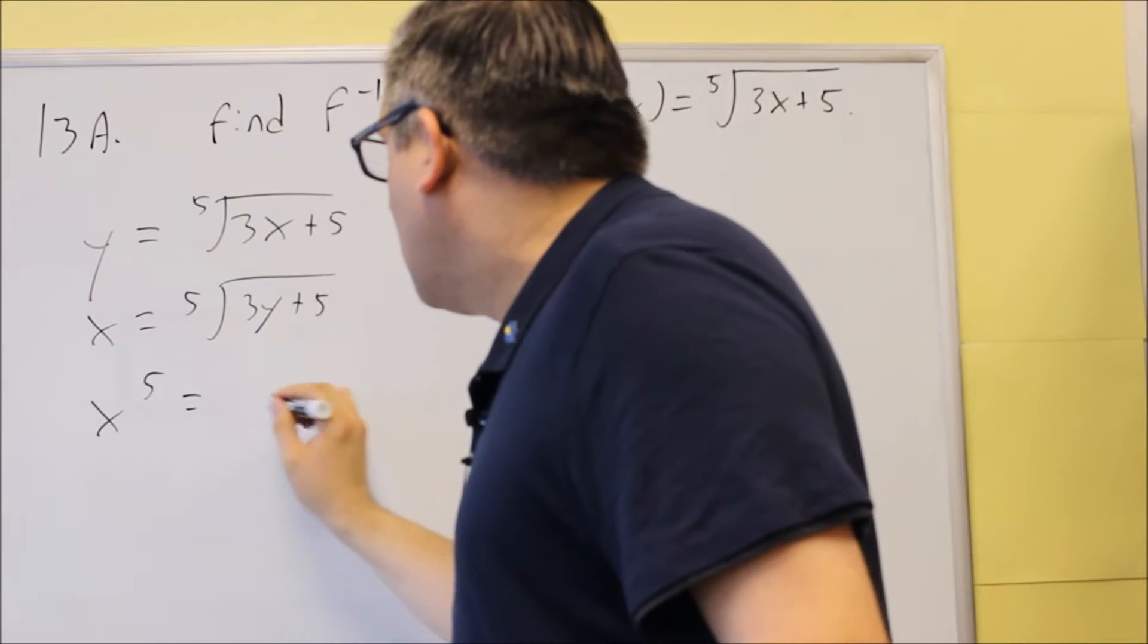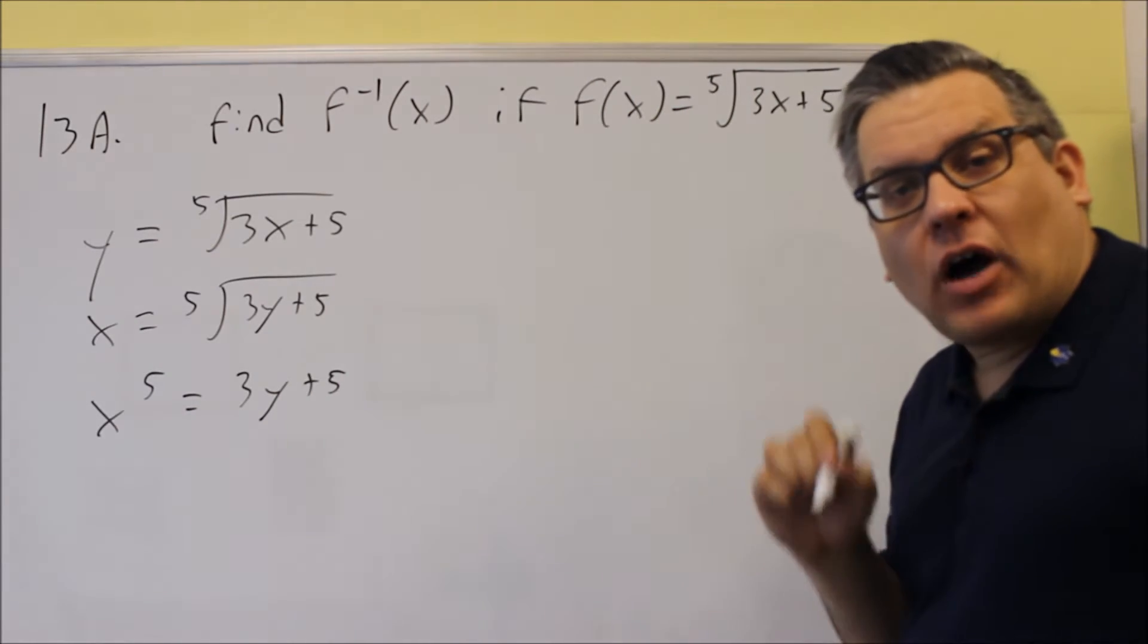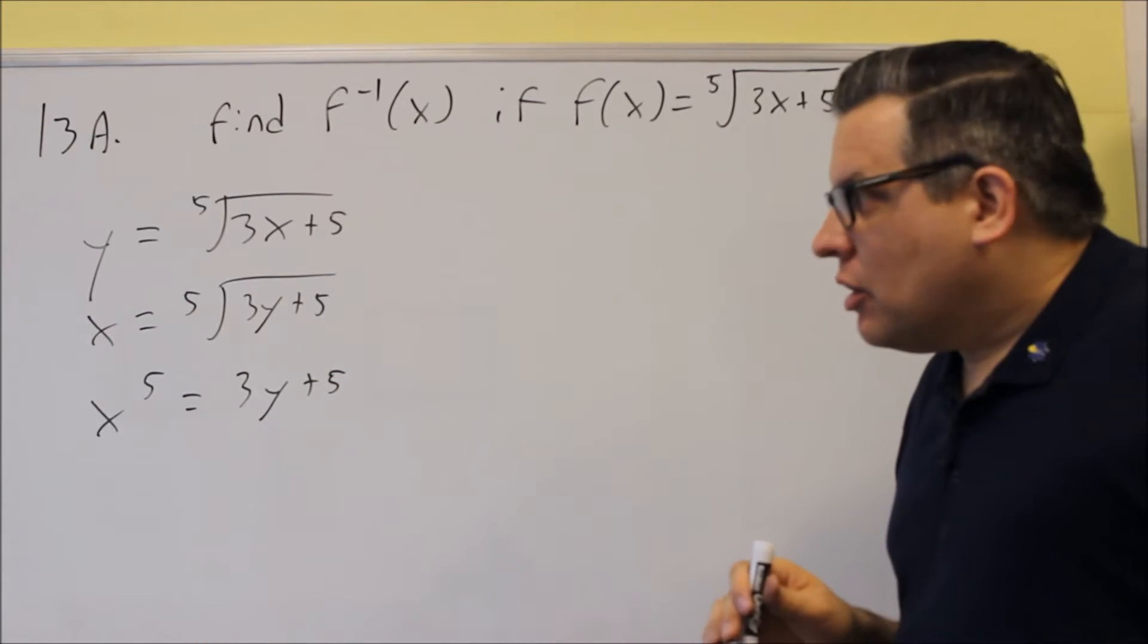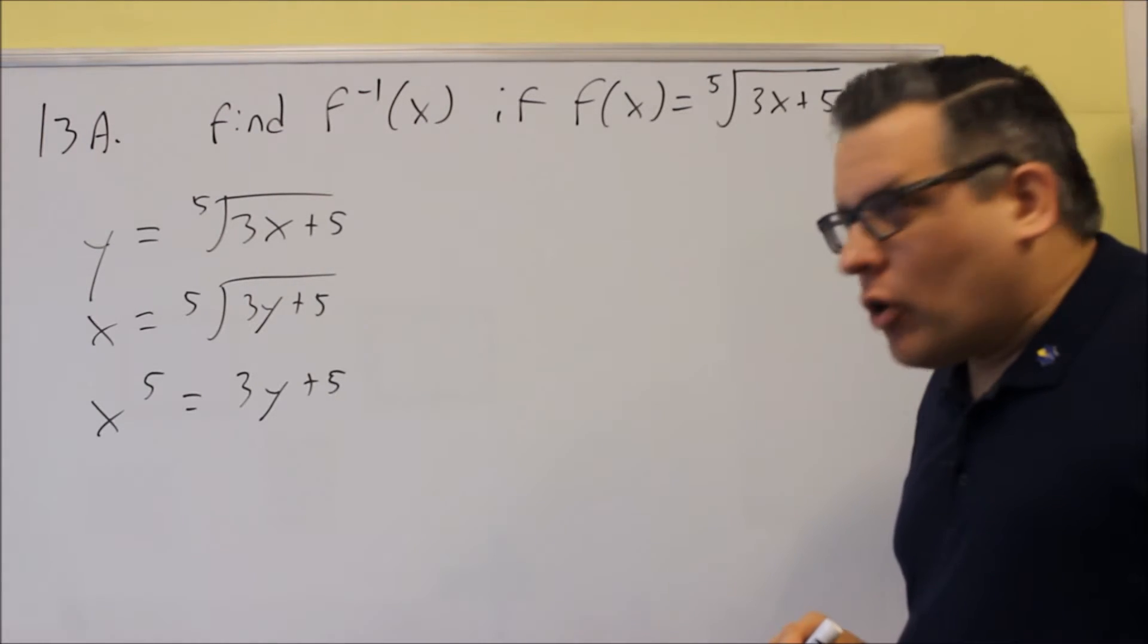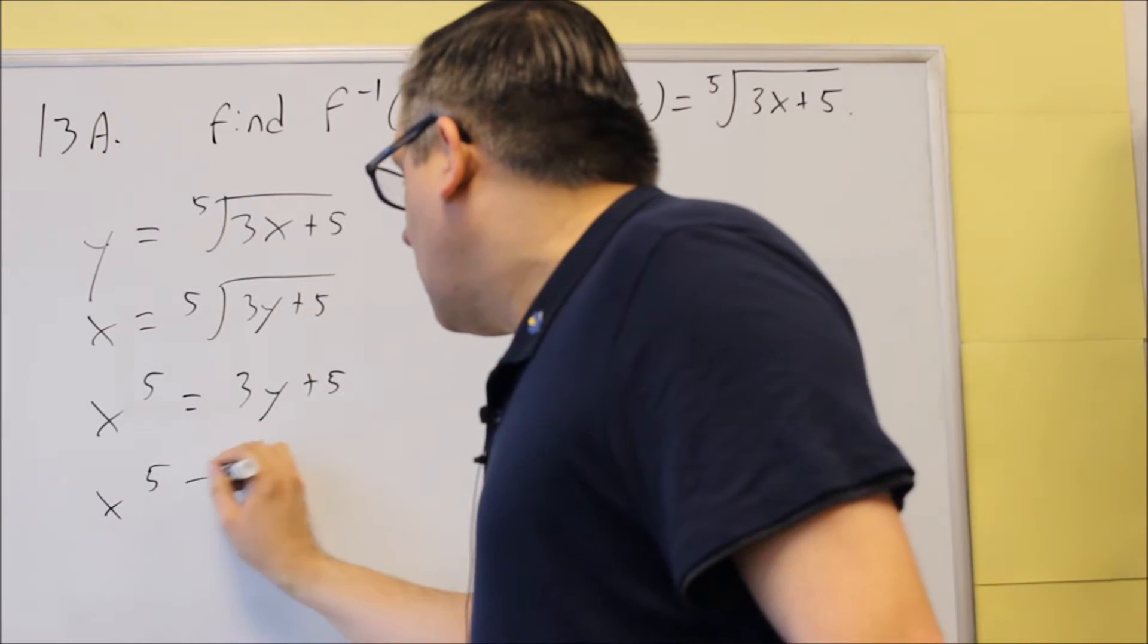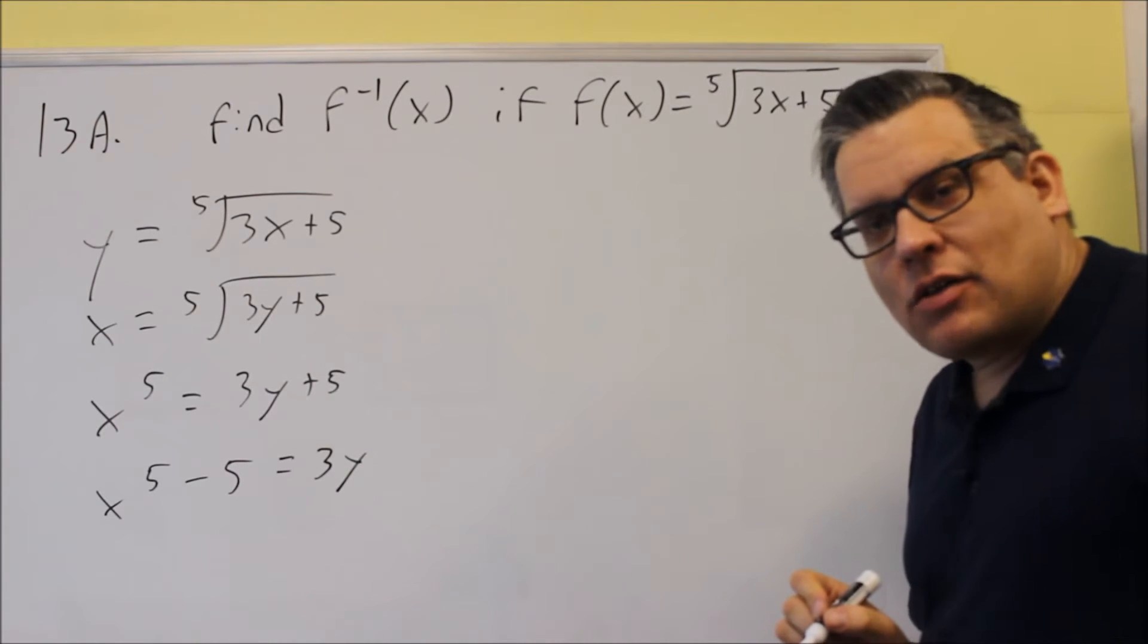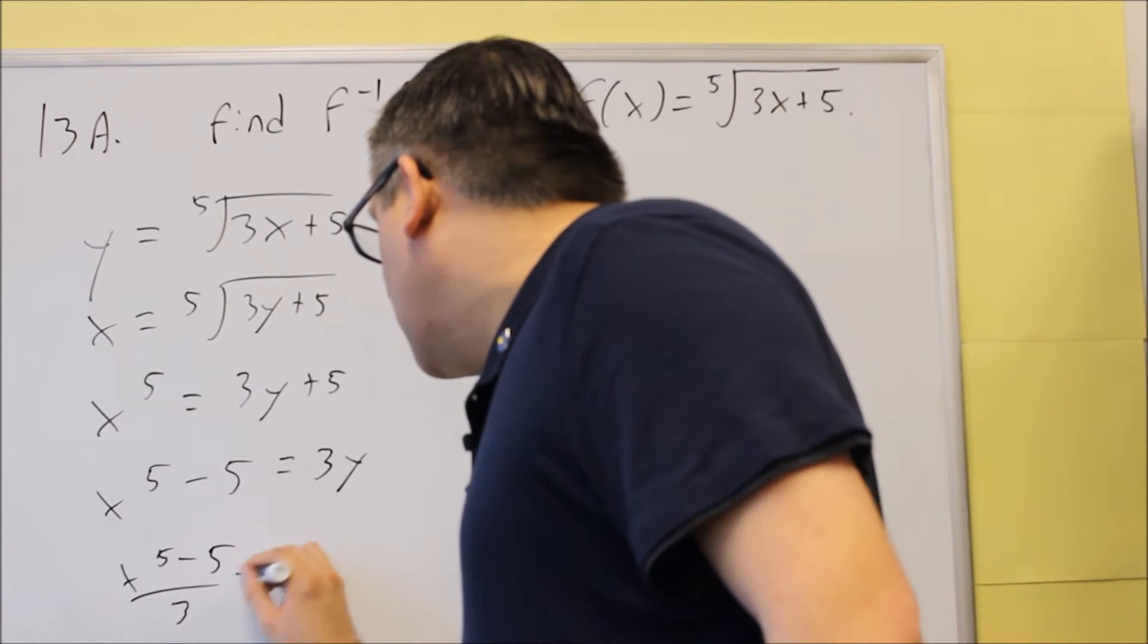So we have x to the fifth. And then what will happen is if you raise that right-hand side to the power of 5, the 5 exponent would cancel out with that one and leave you just with this one here. We still need to solve for y. So we're going to subtract the 5. So x to the fifth minus 5 equals 3y. And then you would divide both sides by 3. And you get x to the fifth minus 5 over 3 equals y.